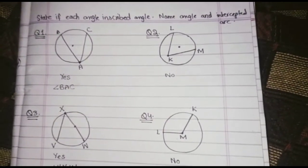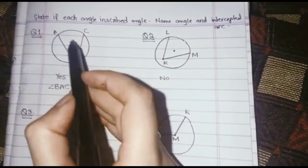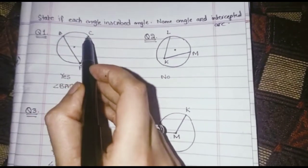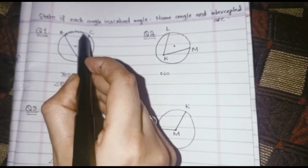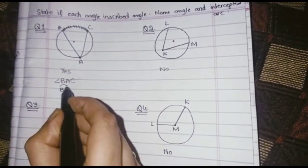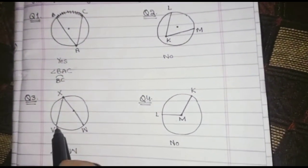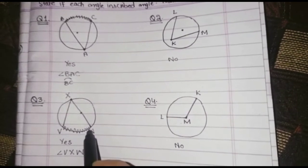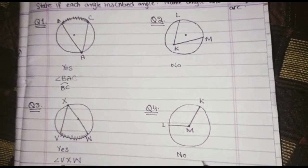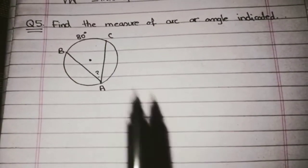He is also asking to write the intercepted arc. The intercepted arc is the arc which is between the two endpoints of the inscribed angle — the arc involved between those two ends. So the intercepted arc here is BC, and in this question the intercepted arc is VW. For the non-inscribed angles, we will not write an intercepted arc.